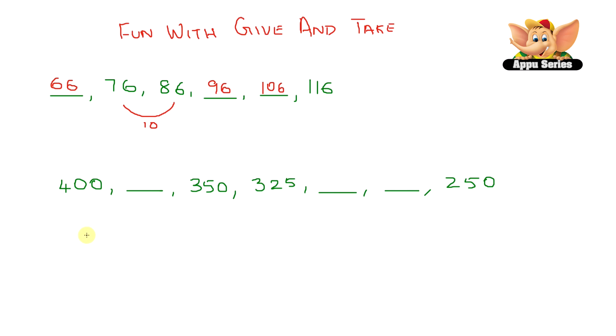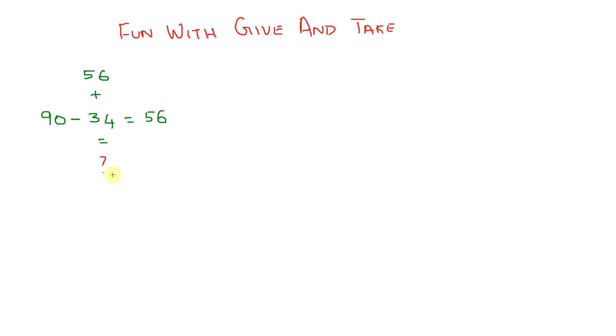Let's do another one. Here we have 400, blank, 350, 325, two blanks, and 250. Here we see a negative jump of 25, so the missing numbers are 375, 300, 275. Pretty simple, huh? Now let's do some more mental math.